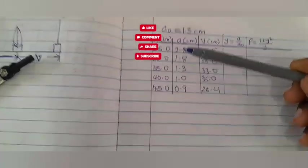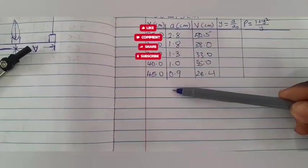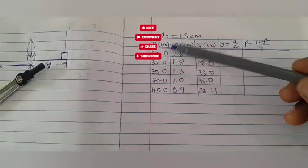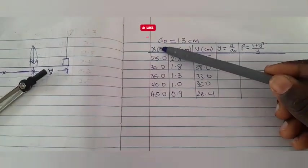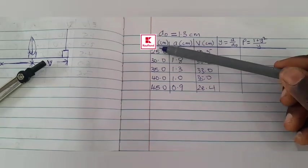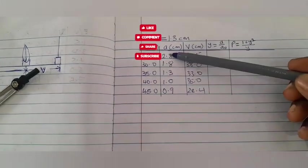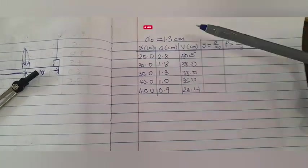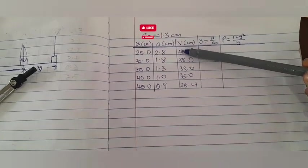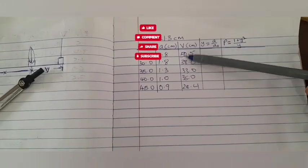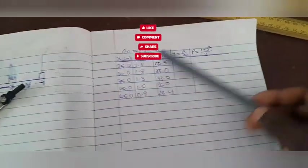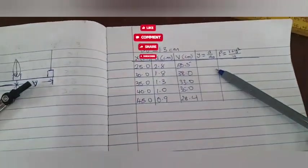Looking at these readings, you can see clear trends: as the distance of the illuminated object from the lens increases, the image diameter decreases. The distance of the screen from the lens also decreases. These are the key trends to observe and follow in this experiment.